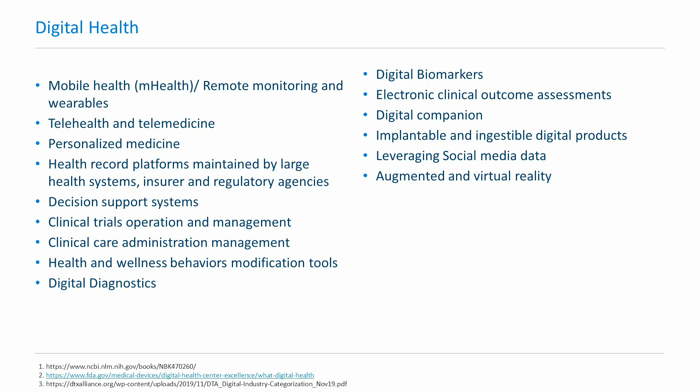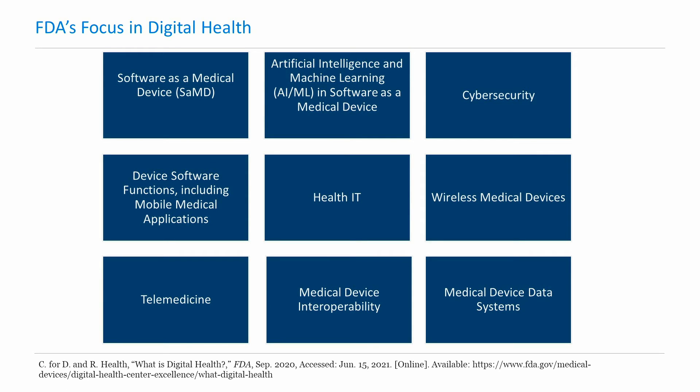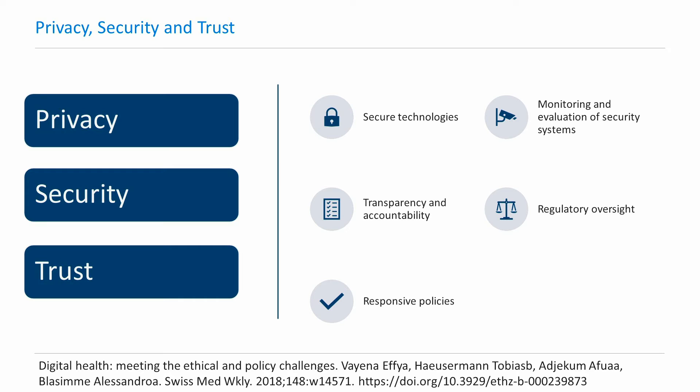There is also increasing interest in the use of social media data, but given its highly unstructured content, there is still a need for improvement in methods that can assist its usage. This slide shows the main focus areas for FDA when it comes to digital health. These include software as medical devices, artificial intelligence and machine learning in software as medical device, cyber security, device software functions including mobile medical applications, health information technologies, wireless medical devices, telemedicine, medical device interoperability, and medical device data systems. Some important considerations for digital data include privacy, security, and trust.